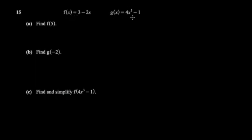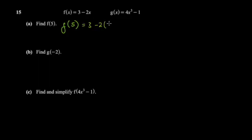So if we're asked to find f(5), notice that wherever there was x, they have replaced it with 5. You do the same — replace x with 5. You get 3 minus 2 times 5, which gives 3 minus 10, and you simply get negative 7.